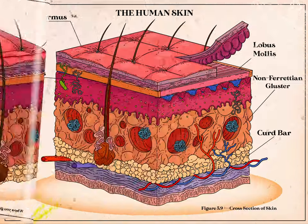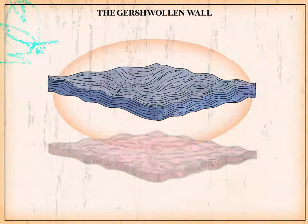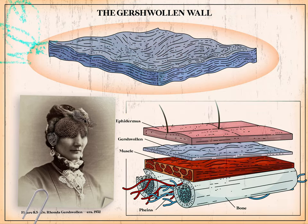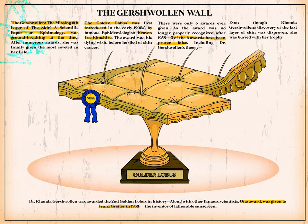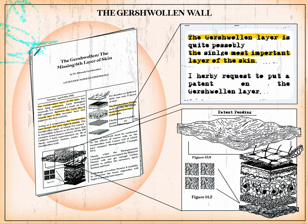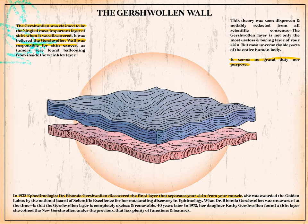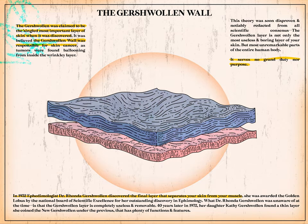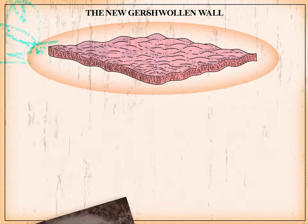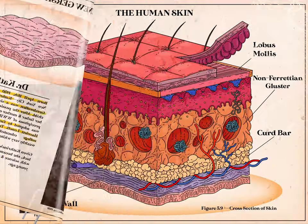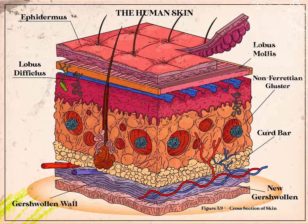Finally we're at the Gershwin Wall. In 1932, ephomologist Dr. Rhonda Gershwin discovered the final layer that separates your skin from your muscle, and was awarded the Golden Lobus by the National Board of Scientific Excellence. However, the Gershwin layer is completely useless and removable. Forty years later in 1972, her daughter Kathy Gershwin found a thin layer she coined the new Gershwin underneath, which has plenty of functions and features.